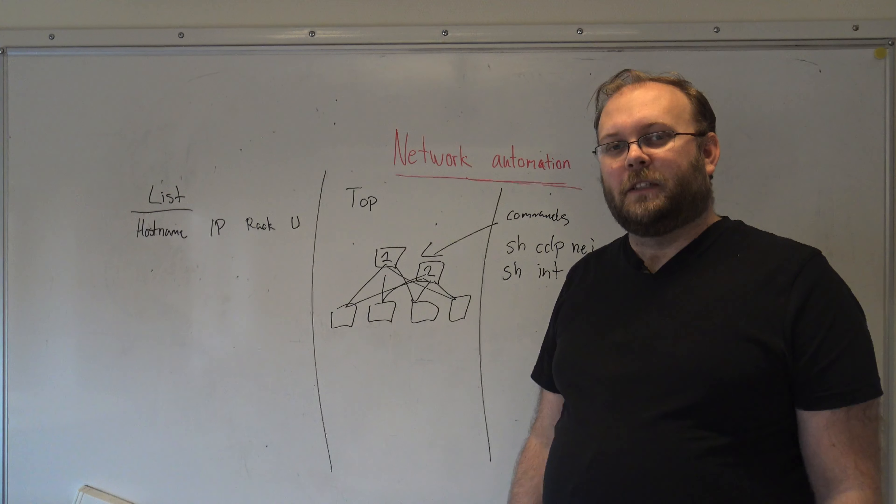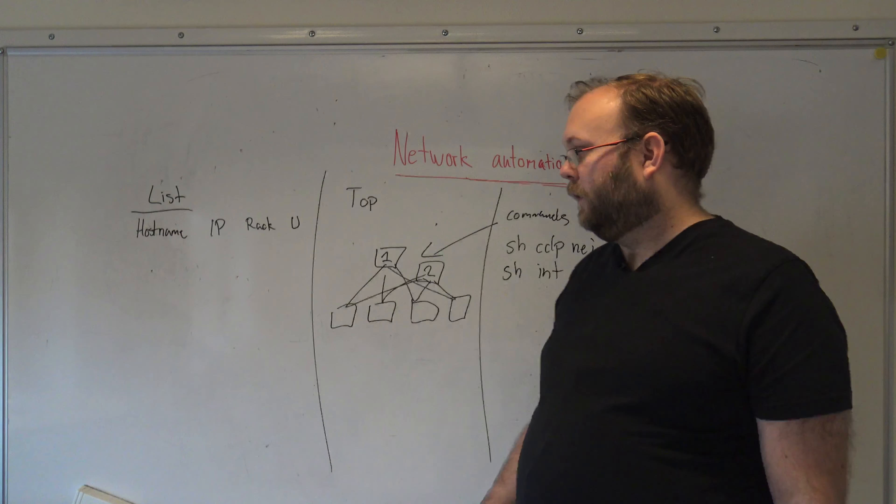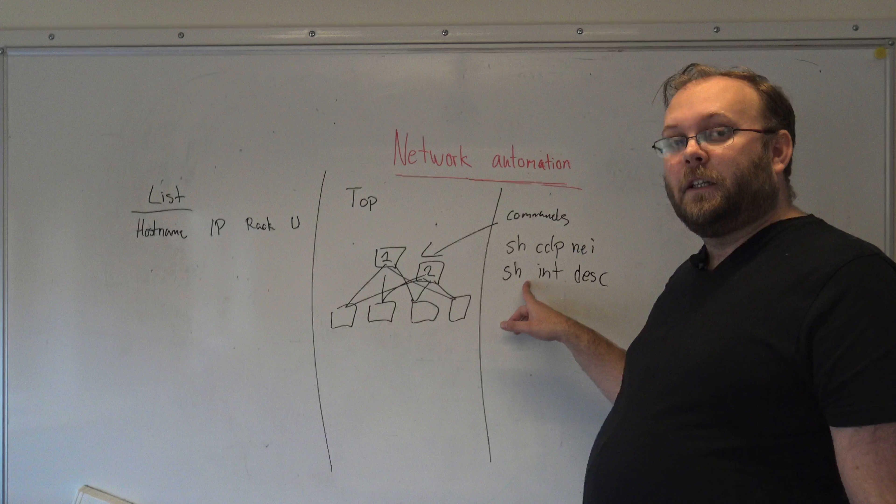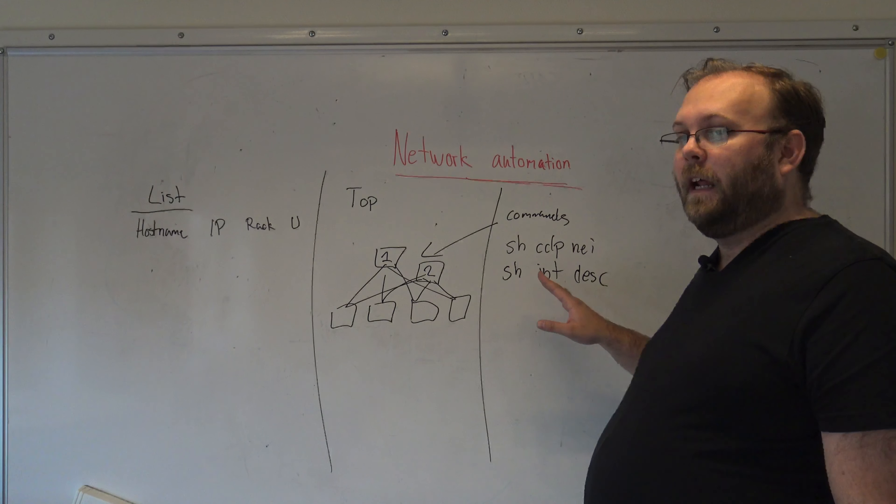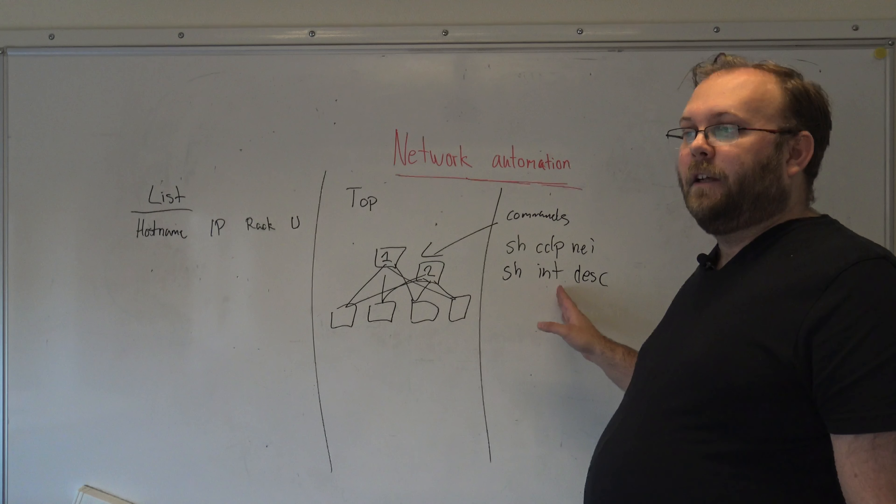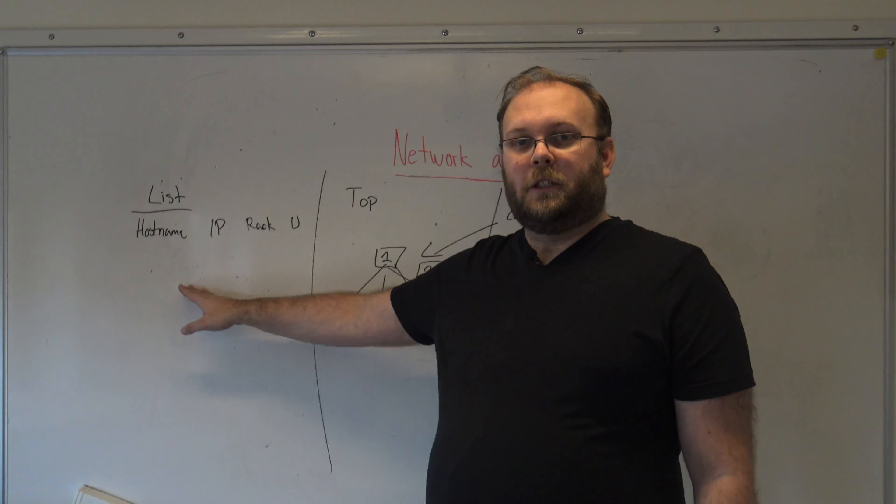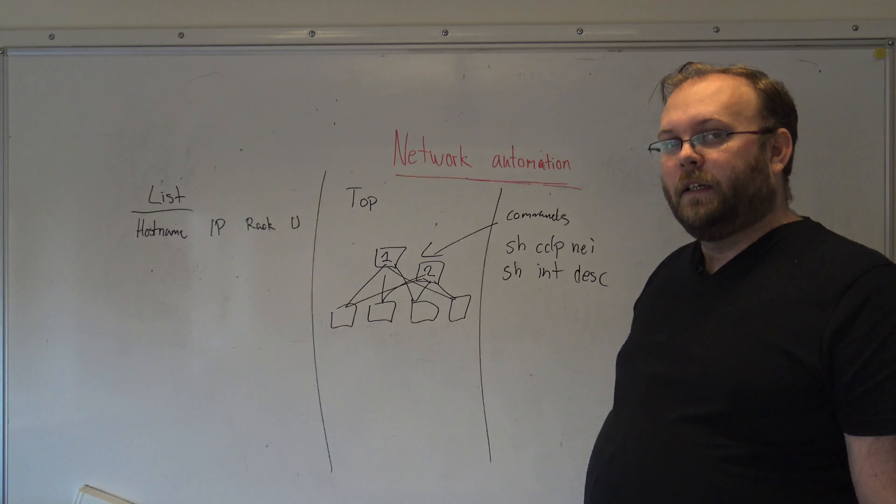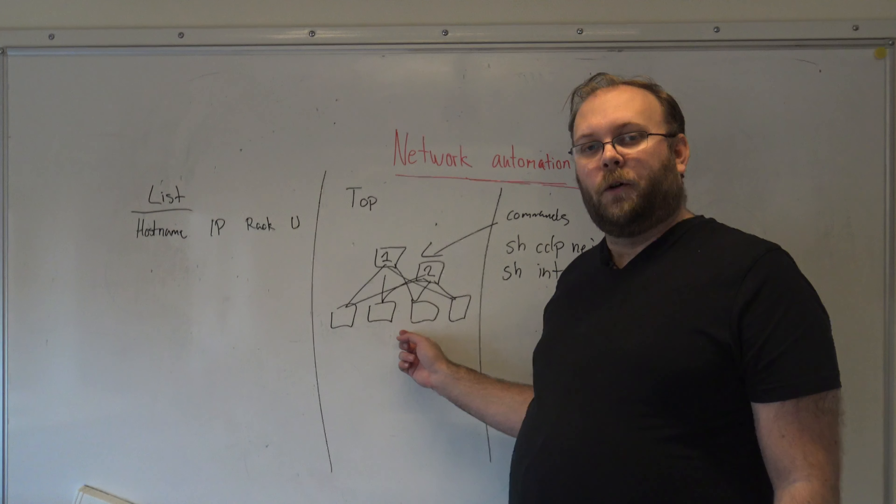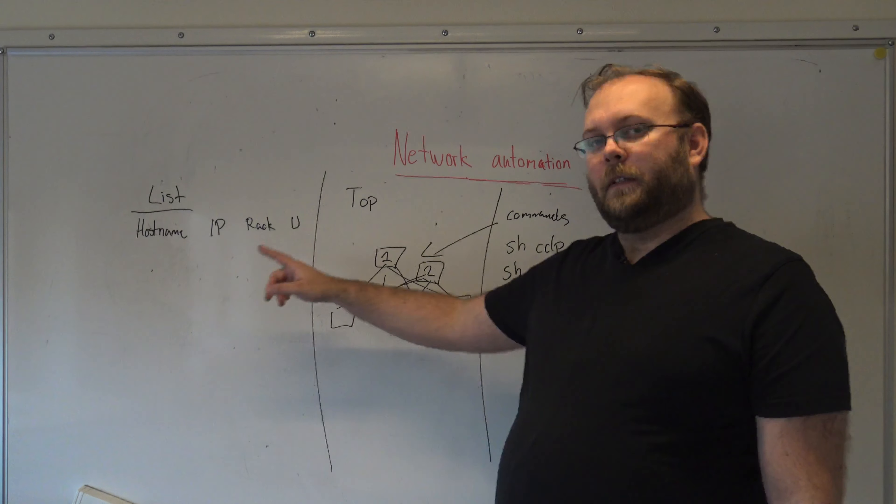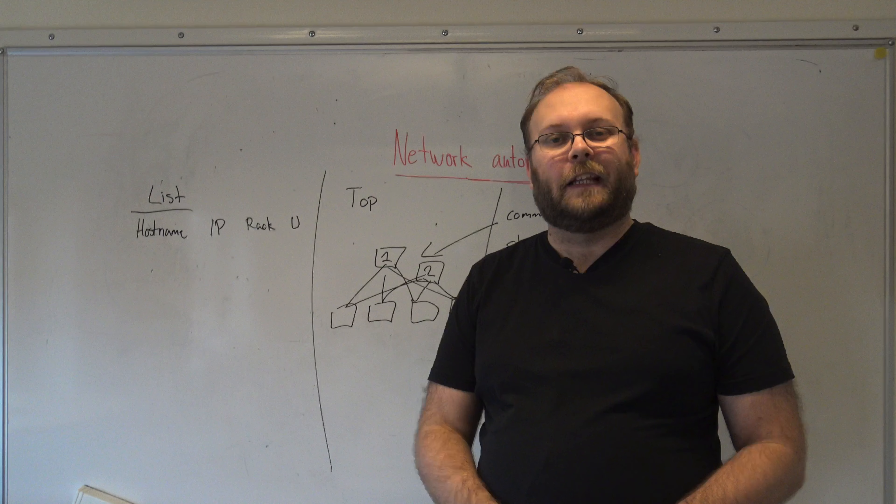And have my documentation system updated automatically. So if someone logs in and changes the description on the port I will see it because I do show interface description. I will have that in a database that I can query from my documentation system and either push it to my documentation system or fetch it from the system. And this way even if someone is doing manual work in the topology, in the network, my system will find a change and it will update the documentation without anyone needing to do it.